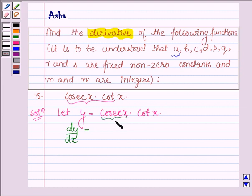Now let cosec X be U and cot X be V. Then by the product rule we have U' times V plus U times V'.